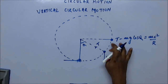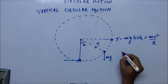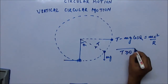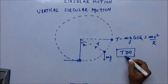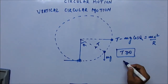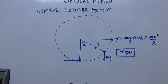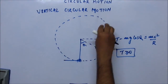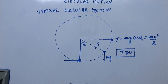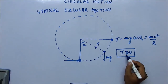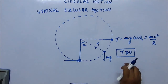The bob will remain in the circular path only if T is greater than or equal to zero. If we find tension as a negative number during calculation, that means the bob has left the circular path. It is possible that the bob goes up and comes down in some other path, not a circular path. So the condition for completing the circular path is that tension should not become less than zero — it can momentarily become zero, but not negative.